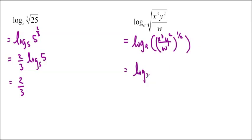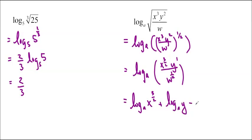Log base A of, and I'm going to distribute this half to all of them. So I get x to the 3 over 2, y to the 1 over w to the half, like that. And now I can separate them out. So log base A of x to the 3 over 2, plus log base A of y, minus log base A of w to the half.